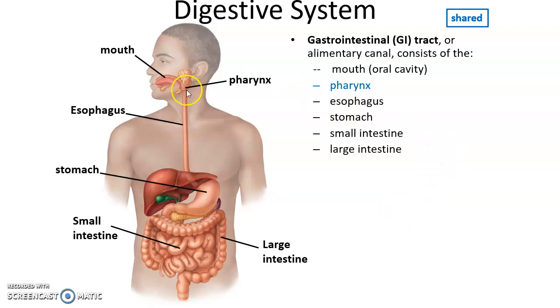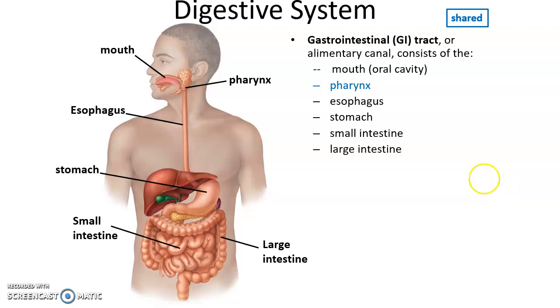It is worth noting that the pharynx, this part of the digestive system, is shared with the respiratory system. The pharynx is a shared structure for the respiratory system and the digestive system.